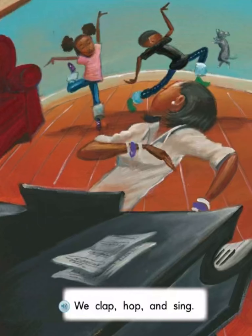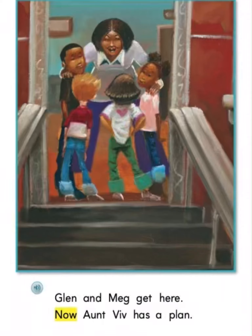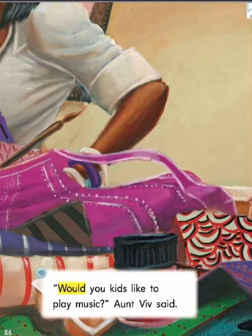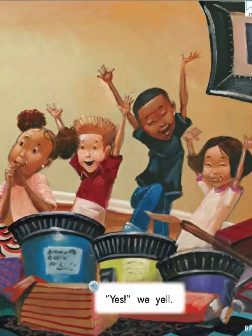We clap, rap, and sing. Glenn and Meg get here. Now aunt Viv has a plan. She has a big bag. A lot can fit in her bag. What is in it? Would you kids like to play music? Aunt Viv said. Yes, we yell.